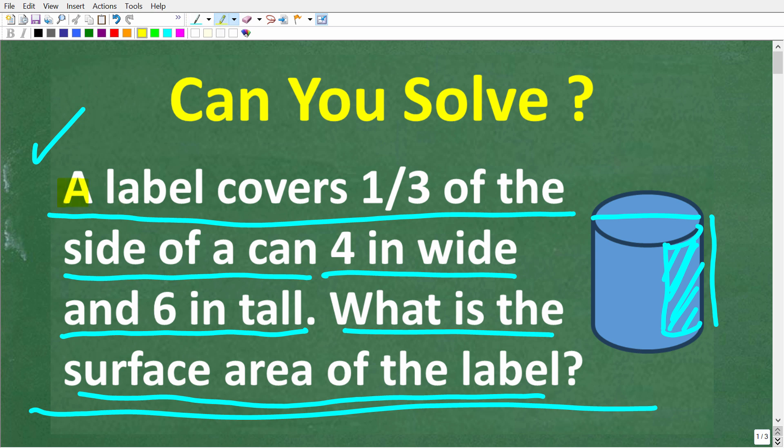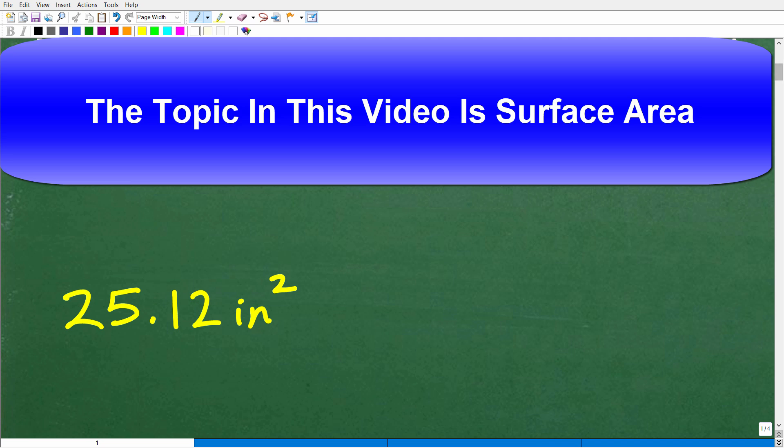All right, so one more time, a label covers one third of the side of a can, four inches wide and six inches tall. What is the surface area of the label? Let's go take a look at the answer. The correct answer is approximately 25.12 inches squared.